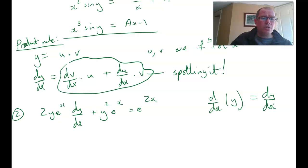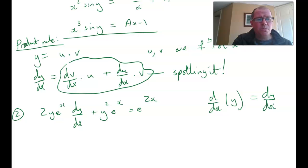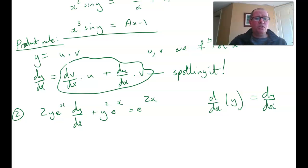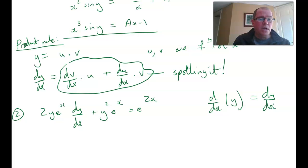This is based on the product rule. So if we have y equals u times v, where u and v are functions of x, then dy/dx is dv/dx multiplied by u plus du/dx multiplied by v. And that's what you have to spot. You have to be able to look at the left-hand side and think: can I rewrite that as dv/dx times u plus du/dx times v? So have a look at number 2 here.